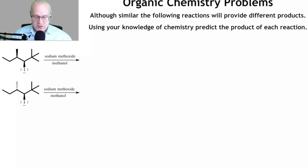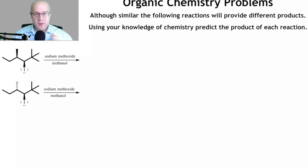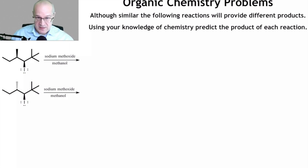These are E2 conditions — 100% E2, no question. Strong base is going to give E2. E2 requires one very special thing: anti-coplanar transition states. We're going to draw these molecules in an anti-coplanar fashion. My advice is just set it up as anti-coplanar. So let's draw a line with carbon, iodine, and hydrogen — that's anti-coplanar right now.